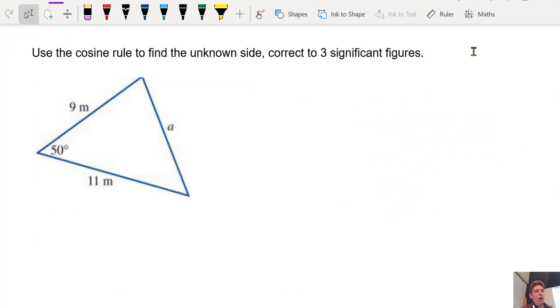So we have a triangle. What do we know about the triangle? We know two sides. Let's call this side B,